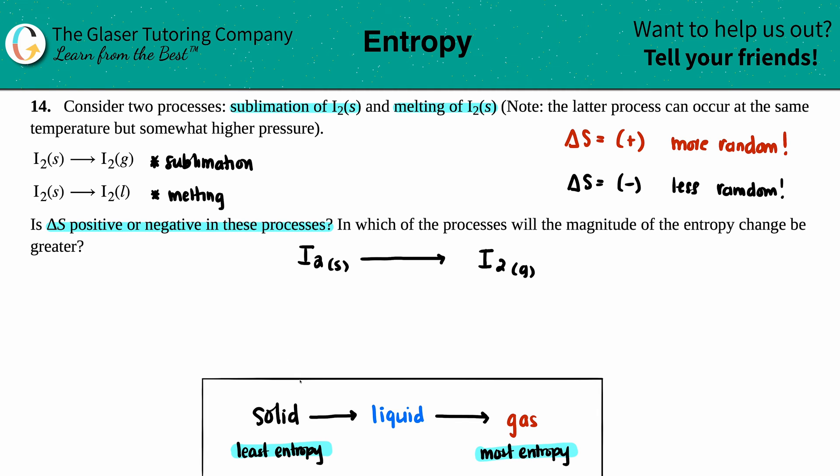Remember solids, liquids, and gases? We learned about these all the way back in the beginning of chem. Solids are very, very, very tightly compact—those molecules are very close together, so their movement is not that great.